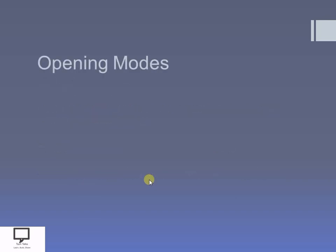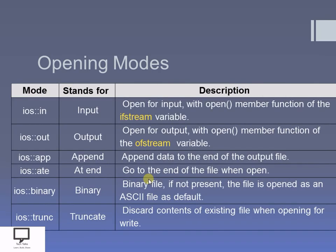Now let's look at the different modes in which we can open a file. This table explains the different opening modes. The first one is 'in' mode, which stands for input mode. If I want to perform a reading operation, I have to open my file with ifstream in the input mode. This input mode is mainly used for reading purposes.